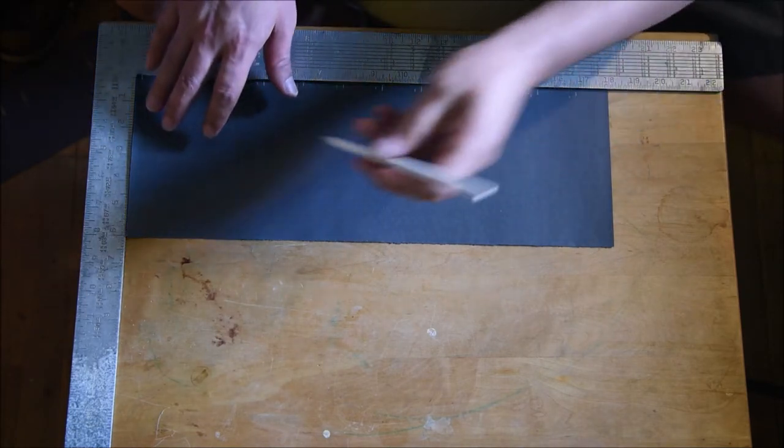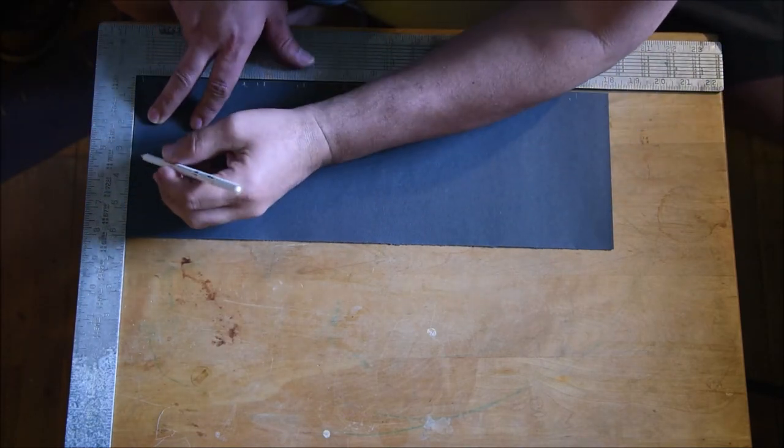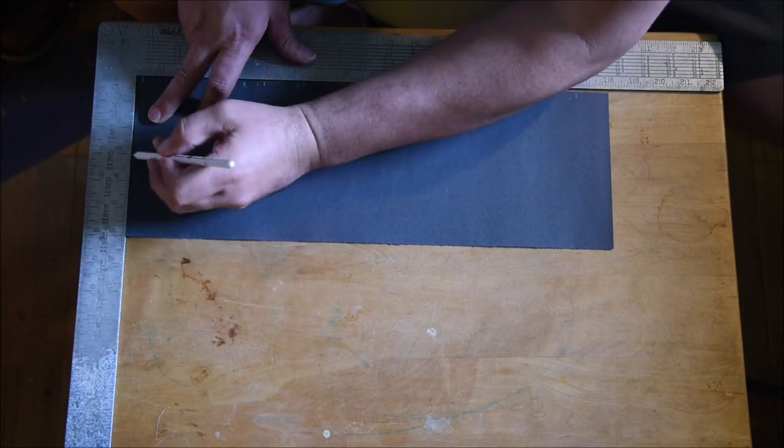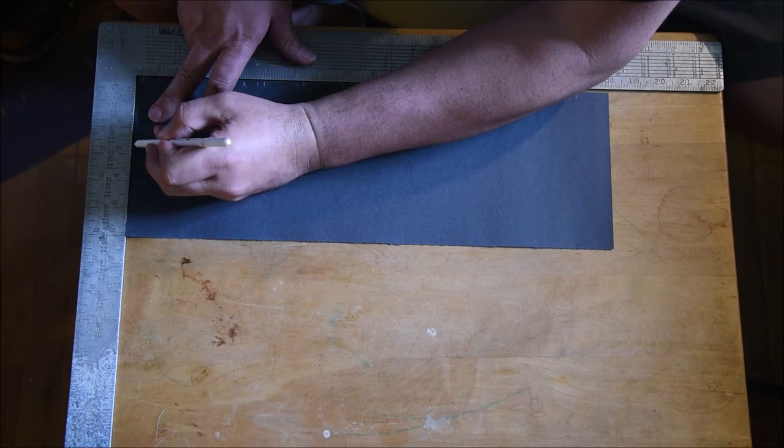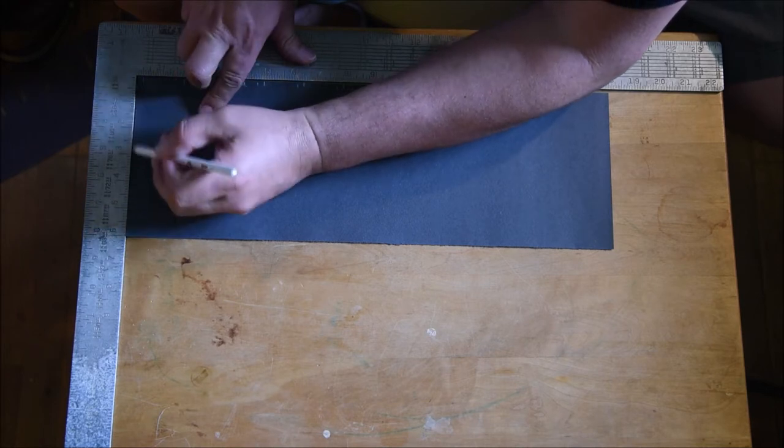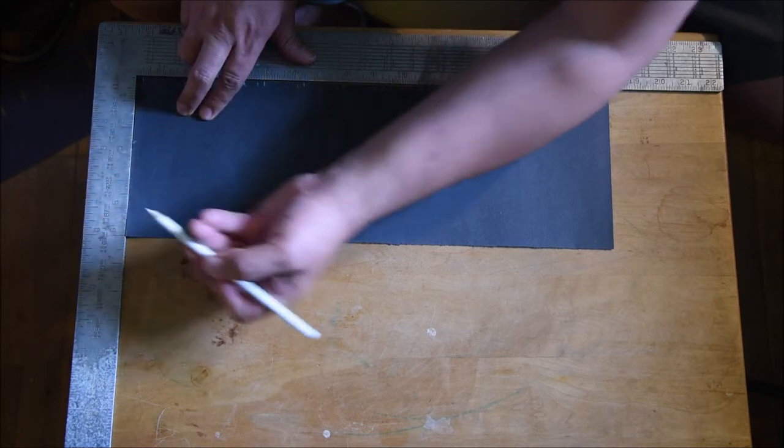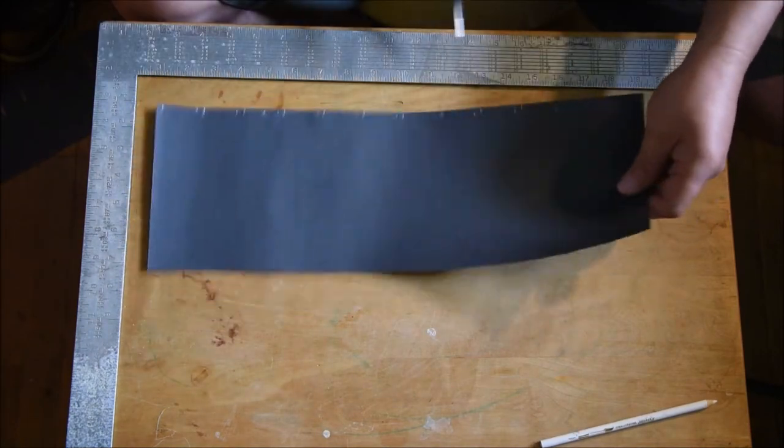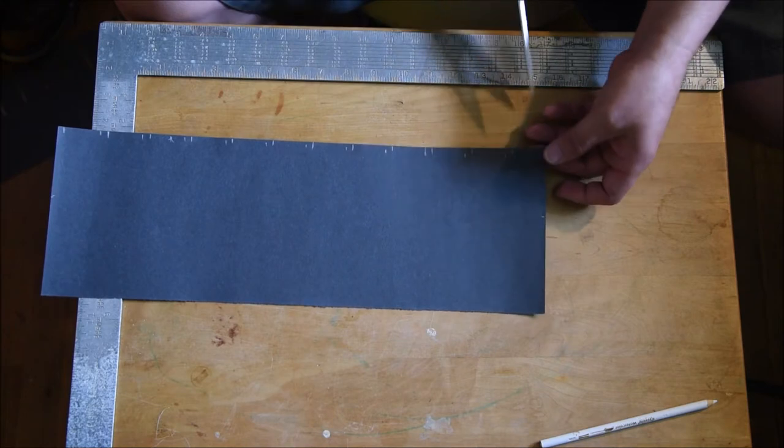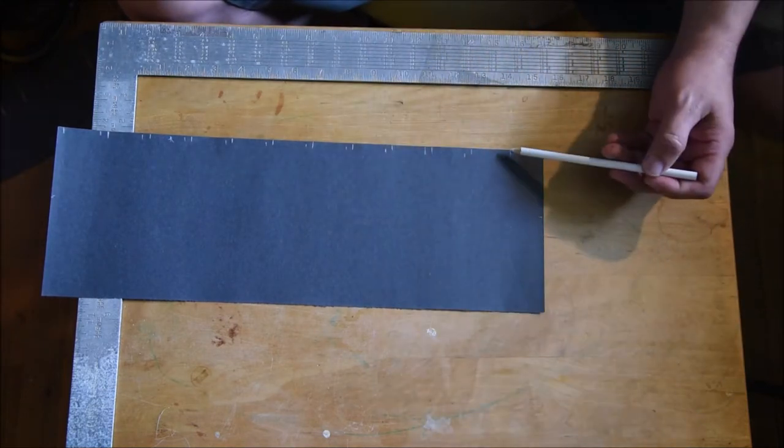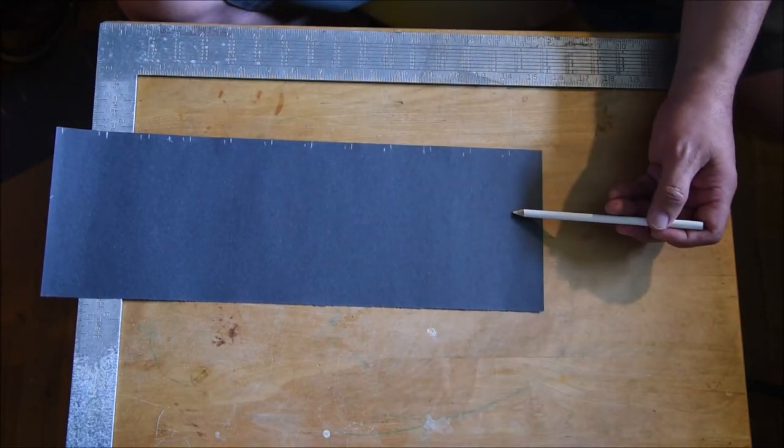And it should look something like this when you're done. Okay, the next thing I want to do is just get a rough idea of how far I'm gonna cut into this, and that's gonna be about two and a half inches. So this is about two and a half inches right there. I'm just gonna put a little mark there. What I want to do is I want to make a cut on each one of these marks, and I want to cut from here down to about right there.